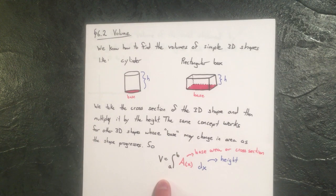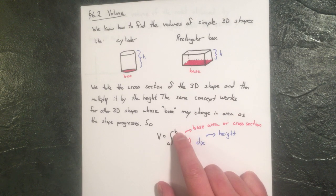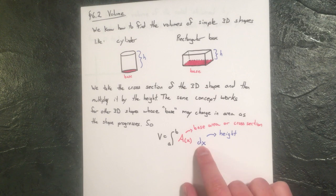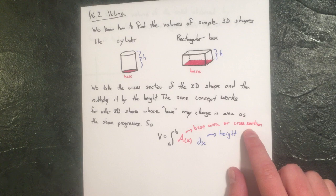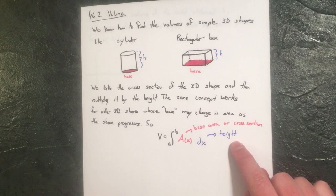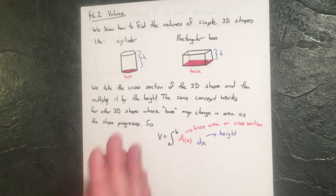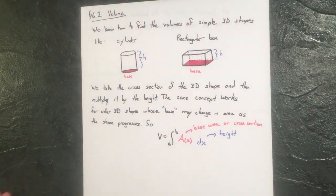The volume formula is: we integrate from a to b the area of the shape with respect to x, so that area is the base area or cross-section area, and that dx stands for the height. We do this because integration is taking an infinite number of things and adding them all together.